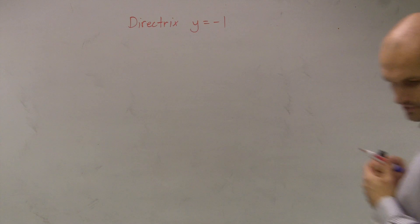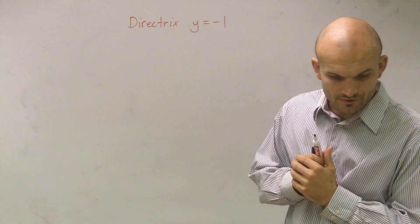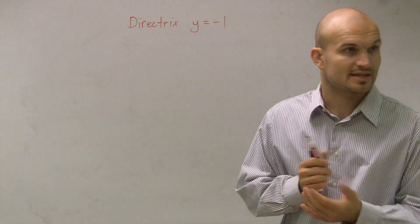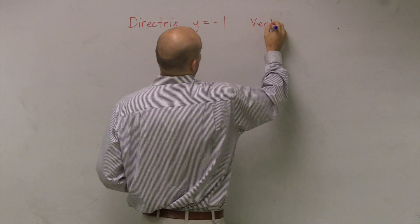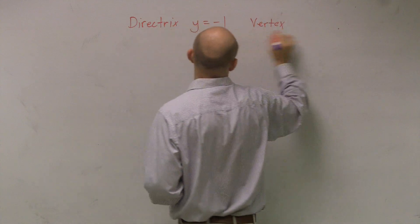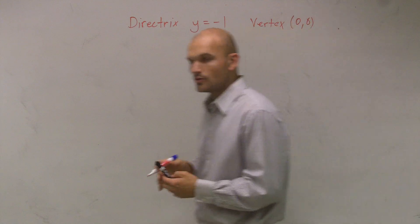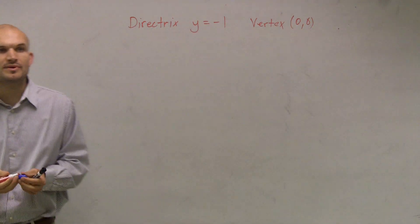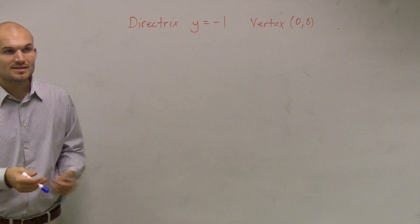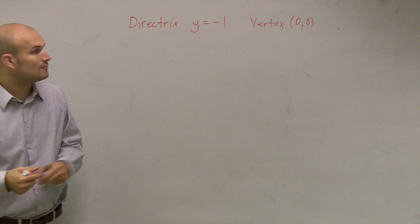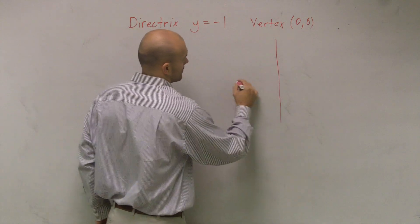All right. On this problem, it says find the standard form of the equation of the parabola with the vertex at the origin. So there's actually two pieces of information we know. We know that the directrix is at negative 1, and the vertex is at 0,0.